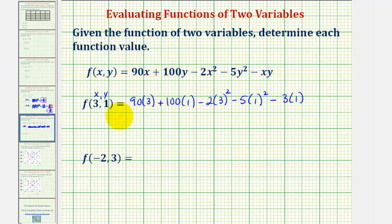And now we'll go ahead and simplify. 90 times three is 270, plus this would be 100. Here, three squared is nine, nine times two is 18, so we have minus 18. One squared is one, times five is five, so we have minus five, and then minus three.